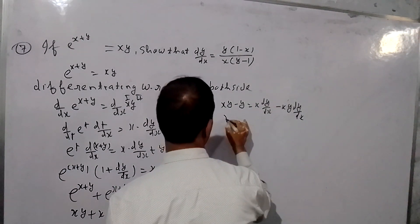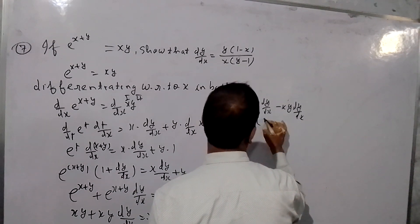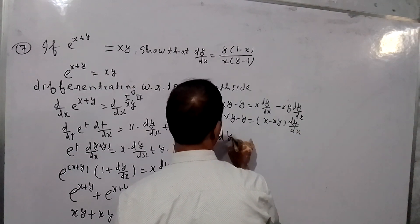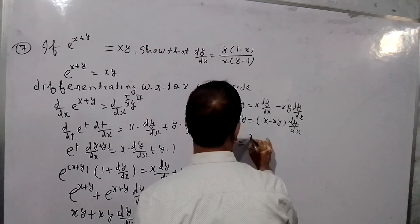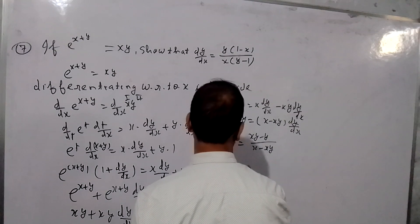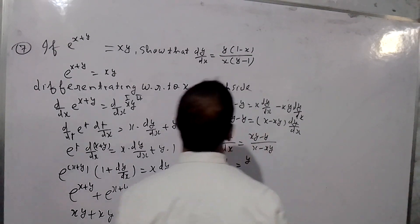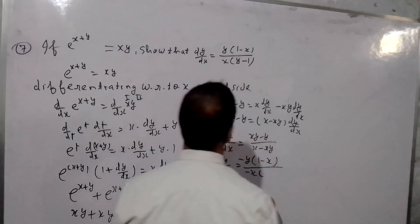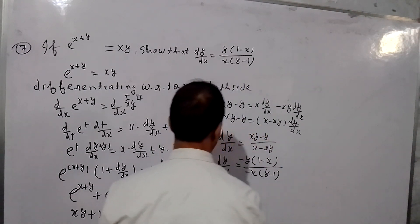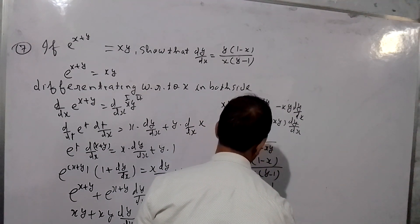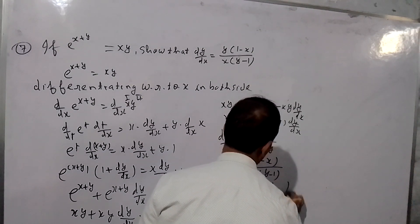Collecting dy/dx terms: e raised to (x plus y) minus y equals x times dy/dx minus e raised to (x plus y) times dy/dx. So dy/dx times (x minus e raised to (x plus y)) equals e raised to (x plus y) minus y, giving dy/dx equal to (y minus e^(x+y)) divided by (e^(x+y) minus x).